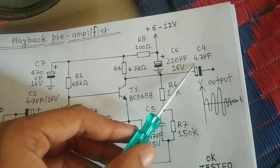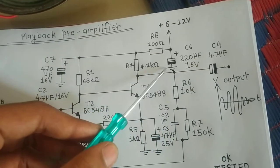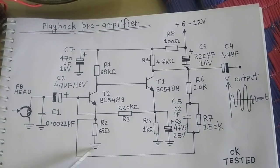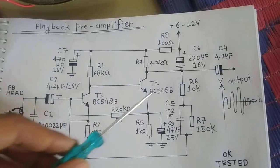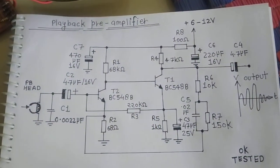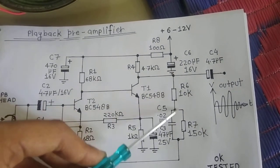I have also used a 4.7 microfarad coupling capacitor here. You can see this is a kind of feedback because the output of this is given to the emitter of this transistor using this network.